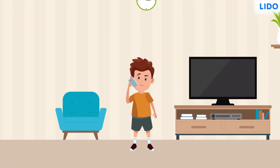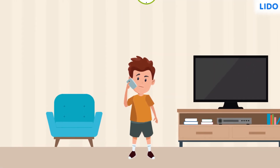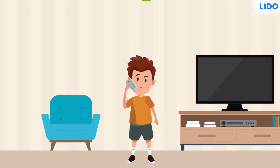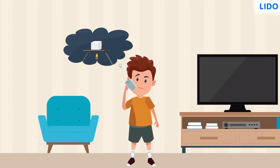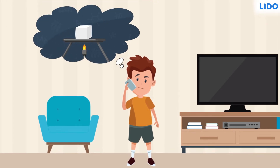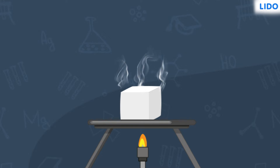His friend Tara reminded him of ways to separate this mixture that they had learnt in school. Lucky remembered that camphor or ammonium chloride directly converts into vapour upon heating. This is called sublimation.